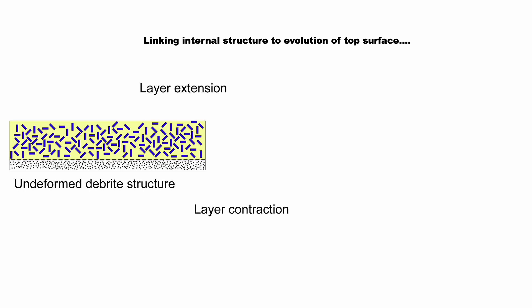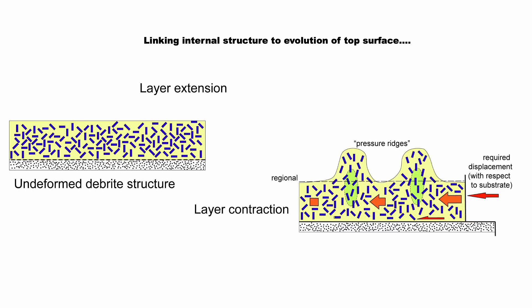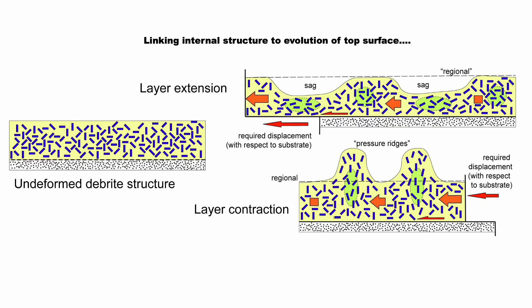Let's consider two types of deformation. In layer contraction, the clasts will tend to align subvertically, while in layer extension the clasts will tend to align horizontally. These different strains should be manifest in the geometry — the morphology — of the debrite's top.